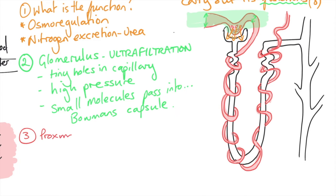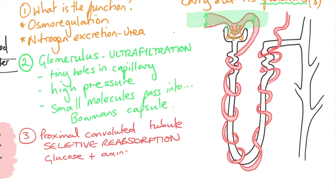So moving on we have the proximal convoluted tubule. This is all about selective reabsorption. So the kidney has filtered everything that's dissolved in the plasma and now it needs to reabsorb the good stuff, the precious stuff. So the first thing it's reabsorbing is the glucose and the amino acids and it does that using protein pumps and energy. So we call that active transport.